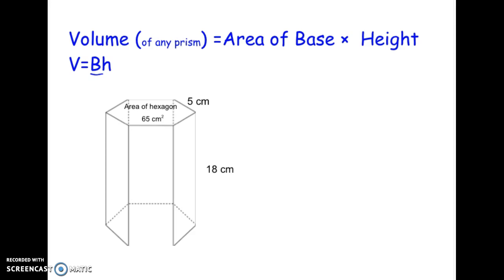So in this case it's a hexagonal prism. This area of the base is 65 square centimeters and the height is 18 centimeters. To find the area, since we're really doing that number of cubes in one layer multiplied by the number of layers, we can just do 65 times 18 and we're going to get 1170. And since volume, we'll be labeling this in cubic centimeters.